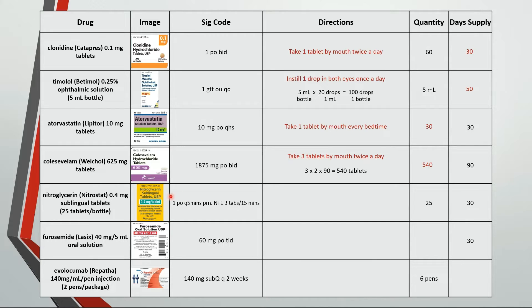For this one, the dosage form is a sublingual tablet, so you'll want to dissolve that under the tongue. The directions are: dissolve one tablet under the tongue every five minutes as needed; do not exceed three tablets in 15 minutes. Nitroglycerin is usually packaged as 25 tablets per bottle, and I usually default to a 30-day supply.